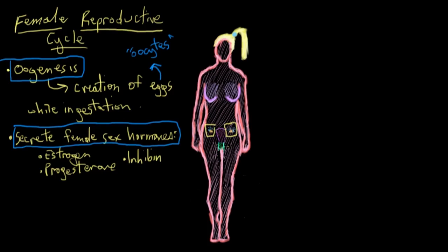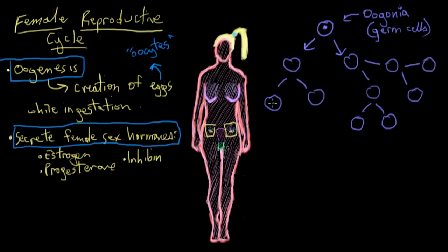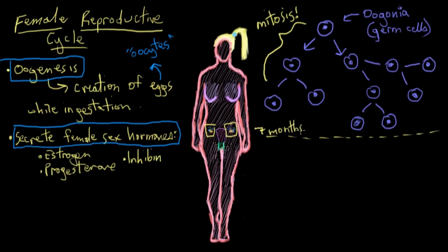Early in uterine development, precursor germ cells called oogonia — which are homologous to spermatogonia in males — undergo a large number of mitotic divisions to make more of themselves. At about the seventh month of development, these divisions stop, and all the ones that have been produced, which is about two to four million, are all she'll have for the rest of her life.